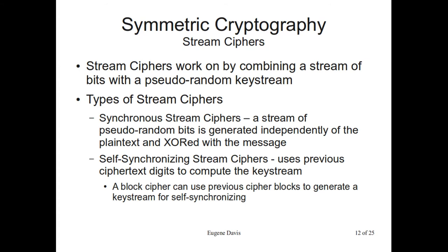What's a stream cipher? Basically this tries to emulate a one-time pad. It takes a stream of bits and tries to XOR them with a stream of random bits. There are two types: synchronous stream ciphers, which generate a stream of pseudorandom data independently of the message and generally XOR those together; and self-synchronizing stream ciphers, which use previous ciphertext characters to compute the key string. Usually with self-synchronizing, you'll end up seeing a block cipher being used in a stream cipher-like mode.